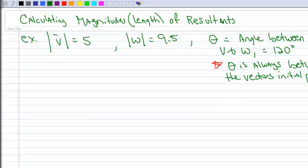So here's a vector V, and your book is going to draw it with this little vector symbol over the top, or it's going to be bolded. That means there's some vector V whose magnitude is 5, and there's some vector W whose magnitude or length is 9.5. We'll make it a little longer because it's 9.5.